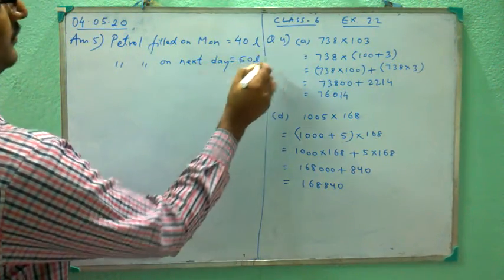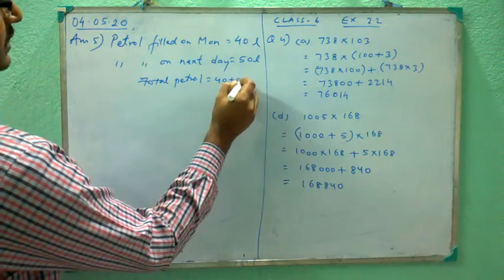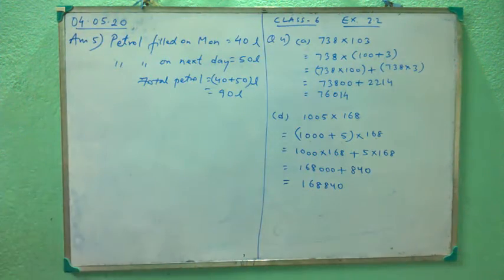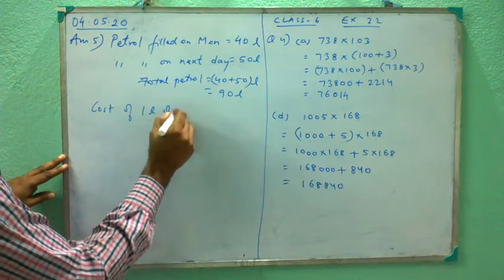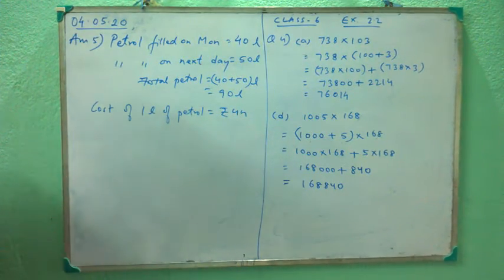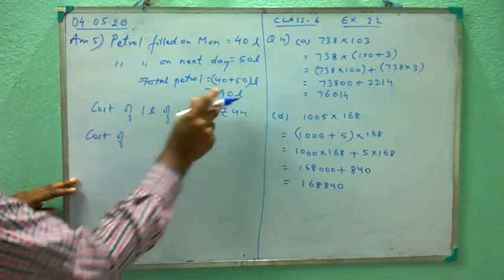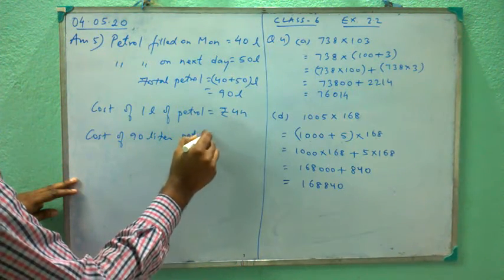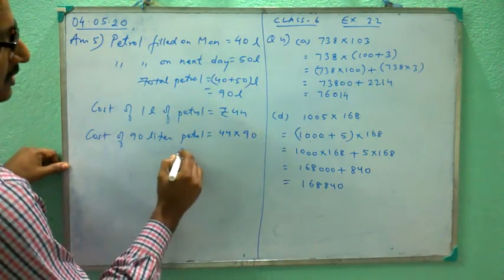Petrol filled on Monday: 40 litres. Petrol filled on next day: 50 litres. So total petrol is 40 plus 50, that is 90 litres. Cost of 1 litre of petrol is given as rupees 44. We have been asked total cost, that is cost of 90 litres of petrol.